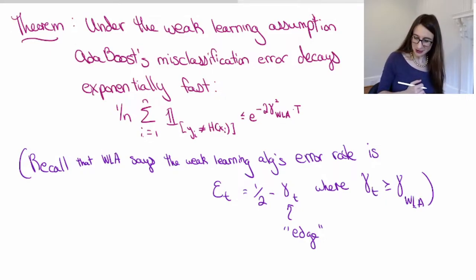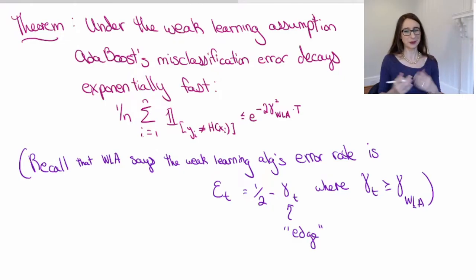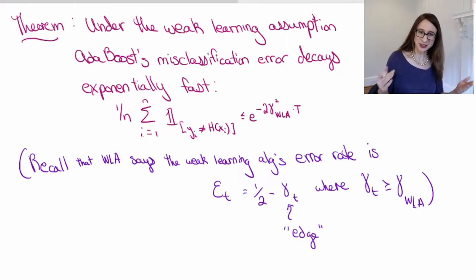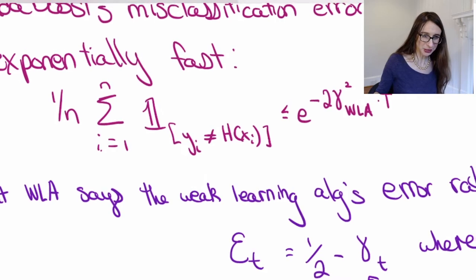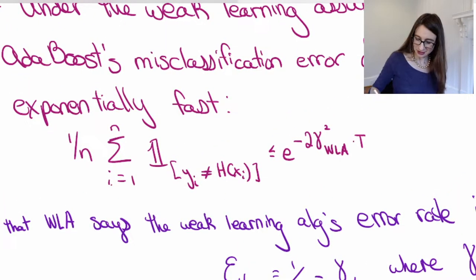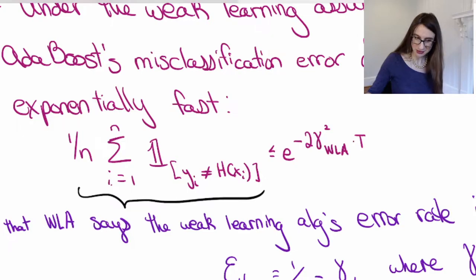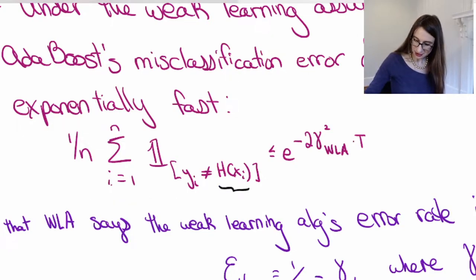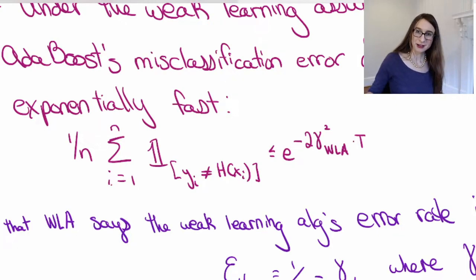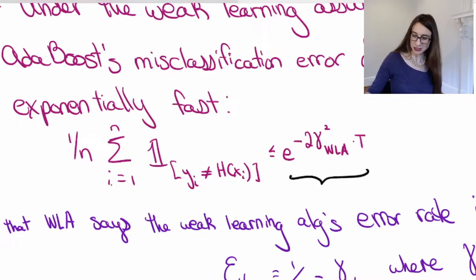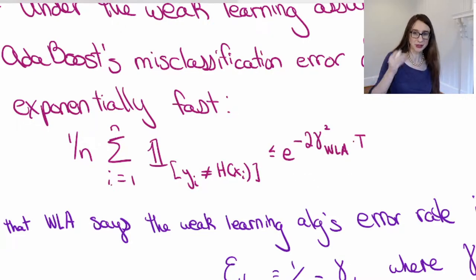I'll get into that a little bit, but first I want to show you that that's actually true. The theorem we're going to prove is that the misclassification error of AdaBoost — H_T is its combined classifier — that the error rate of this combined classifier is less than the following quantity, which decays exponentially with the number of rounds of AdaBoost.